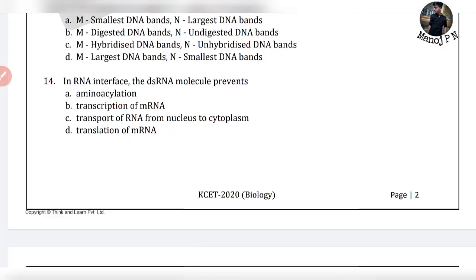Look at the 14th question: in RNA interference, the dsRNA molecule prevents — there are 4 options. The answer is option D: translation of mRNA. RNA interference is the process by which a complementary double-stranded RNA is formed in order to silence an mRNA. If you want to silence an mRNA, the complementary double-stranded RNA is formed. This prevents the mRNA from further translating. So it will not translate further into protein. That is option D: translation of mRNA.